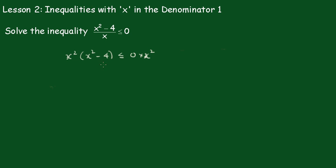1 over x. Now this cancels out. We get x into x squared minus 4 is less than or equal 0.